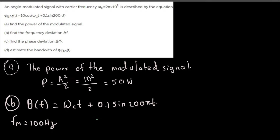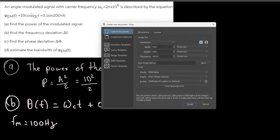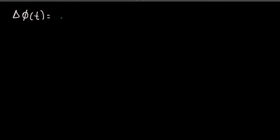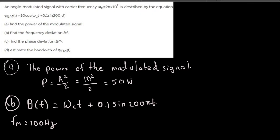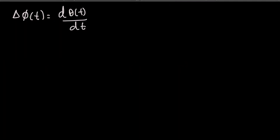We also need another key relationship: the instantaneous frequency deviation dθ(t)/dt. This derivative gives us Δω_i(t), and if we divide that by 2π we get the instantaneous frequency deviation Δf(t).